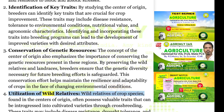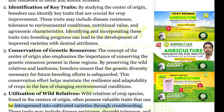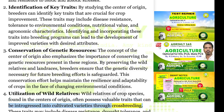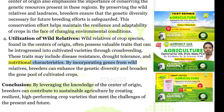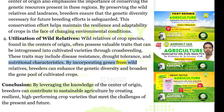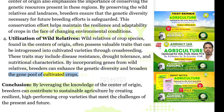Utilization of wild relatives: Wild relatives of crop species found in the centers of origin often possess valuable traits that can be introgressed into cultivated varieties through cross-breeding. These traits may include disease resistance, drought tolerance, and nutritional characteristics. By incorporating genes from wild relatives, breeders can enhance the genetic diversity and broaden the gene pool of cultivated crops.